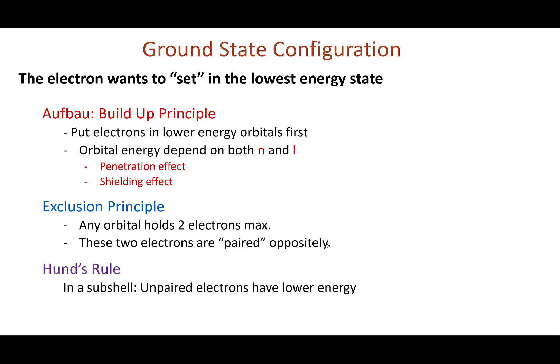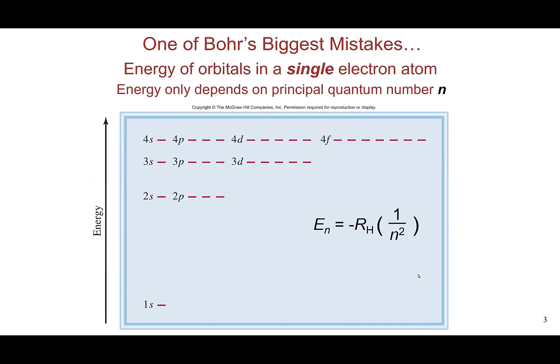Let's start with the Aufbau principle — how orbital energies compare to each other. According to Bohr's atom, all the orbitals that belong to a certain energy level should have the same energy. Both 2p and 2s should have had the same energy, and all 3s, 3p, and 3d should have had the same energy. However, this is not correct.